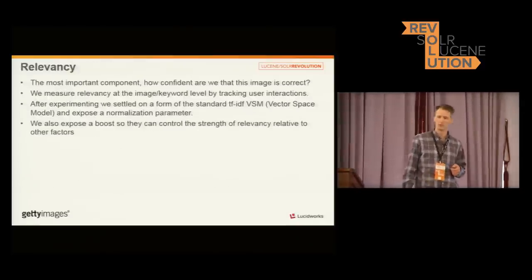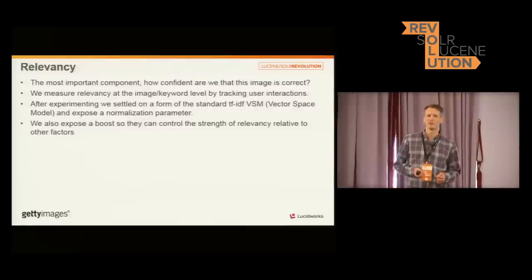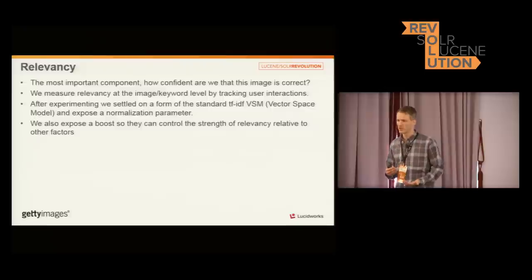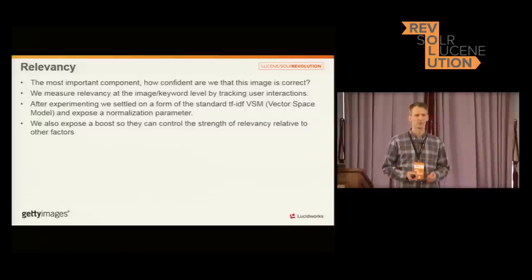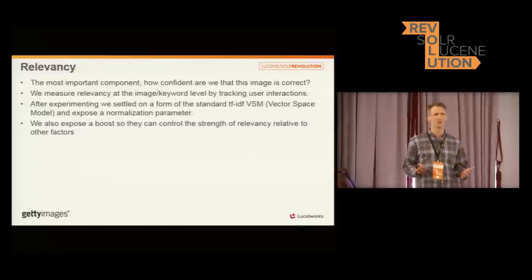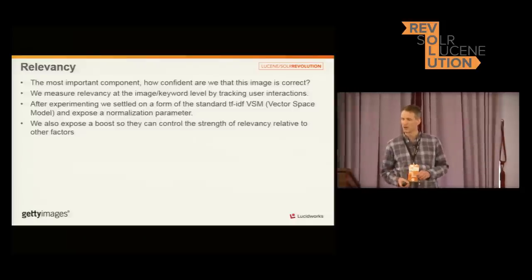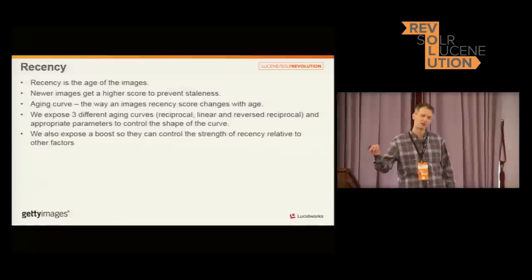Let's talk about the individual components. The most important is relevancy. We measure relevancy for our images — because the text isn't the content — by relying on user interaction to tell us whether a keyword is appropriate for an image. We lean very heavily on that as our measure of relevancy. We use a form of the standard TF-IDF — term frequency, inverse document frequency — that's used for default Lucene scoring, because it does such a great job of normalizing between popular and unpopular keywords. The one issue is it can make business users' eyes glaze over when I try to explain it. But it's just too powerful not to use. And there's also a boost to weigh the relevancy relative to the other factors.